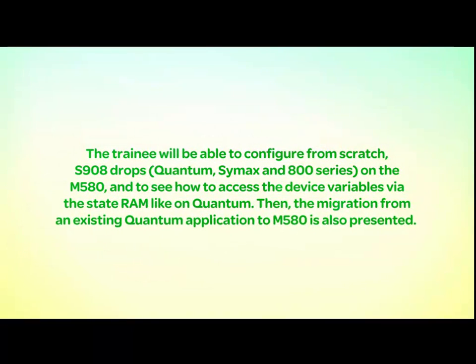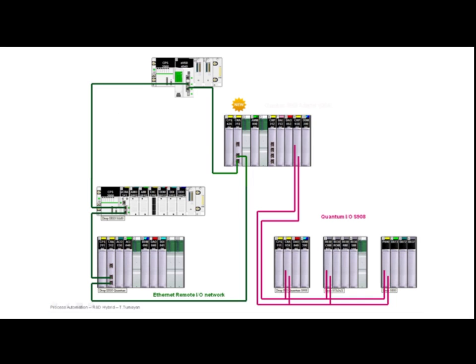After viewing this training, the trainee will be able to configure from scratch S908 drops on the M580. The trainee will also understand how to access the device variables via the state RAM, such as found on the Quantum PLC. Finally, you will be presented information on how to migrate an existing Quantum application to the Modicon M580.